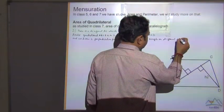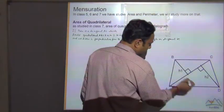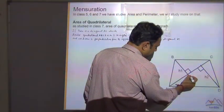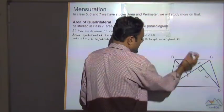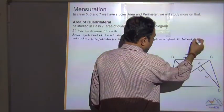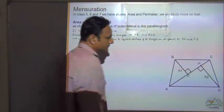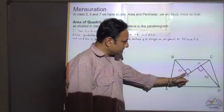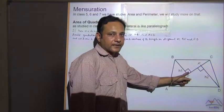That is, say ABCD, say E and F, so diagonals are BE and FD, and perpendicular means they make a 90 degree angle.